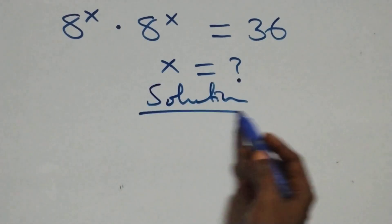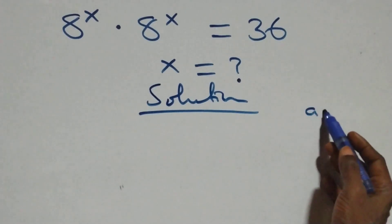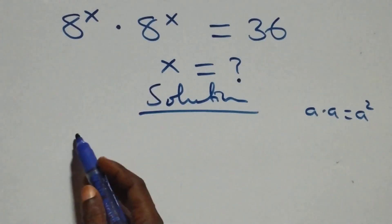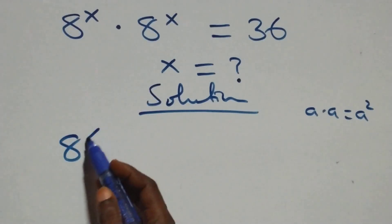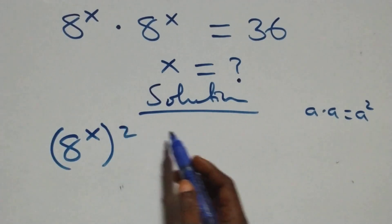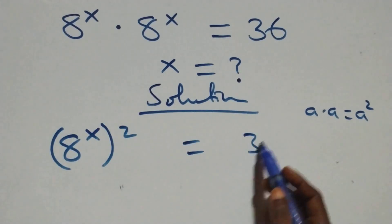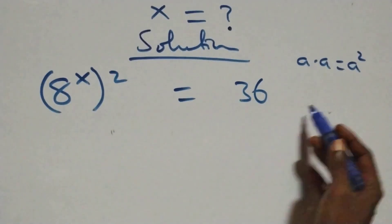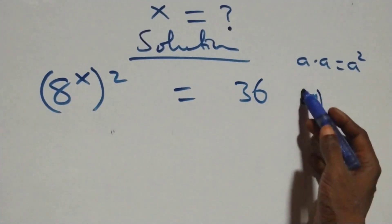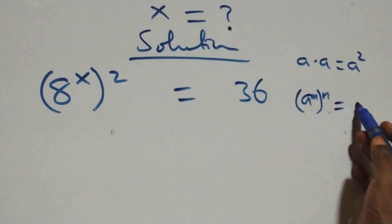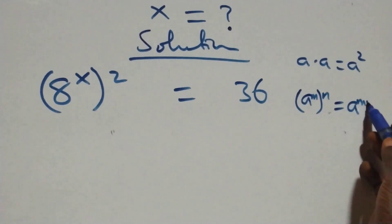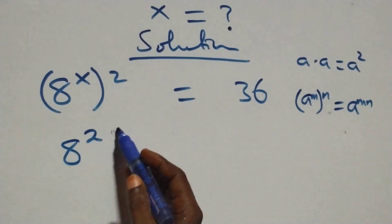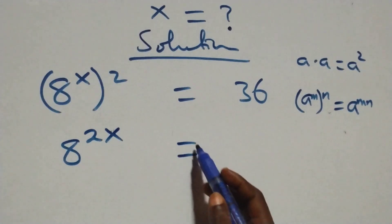From what we have here, a times a is the same thing as a squared. Multiplying follows and we have a raised to power x or squared equals 36. Applying the rule a raised to power m raised to power n equals a raised to power mn, this power multiplies and we have 8 raised to power 2x equals 36.